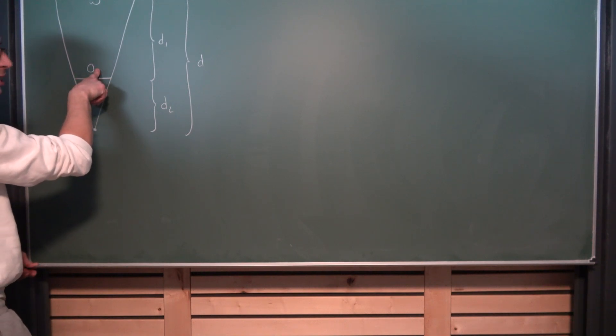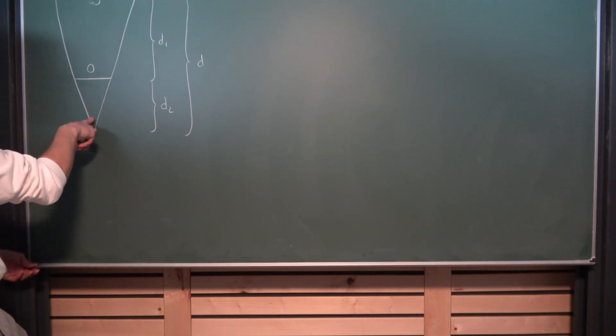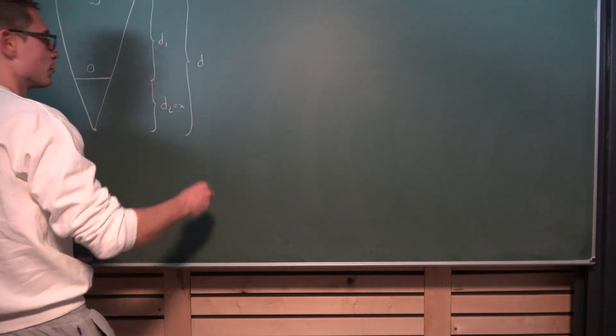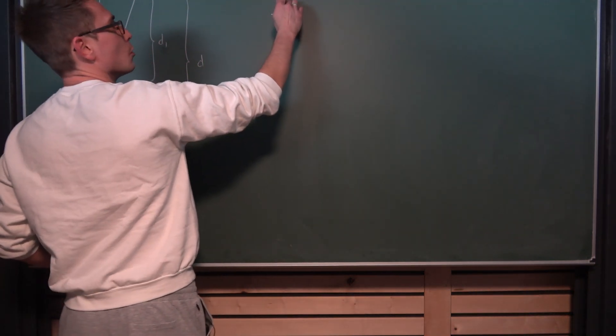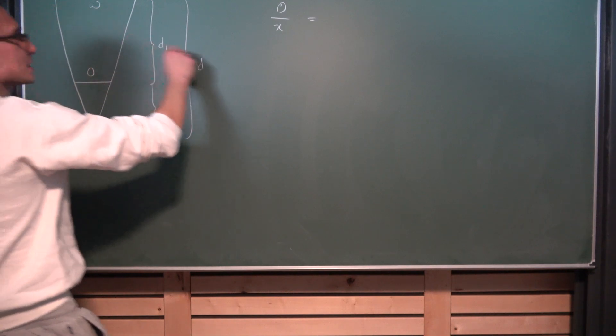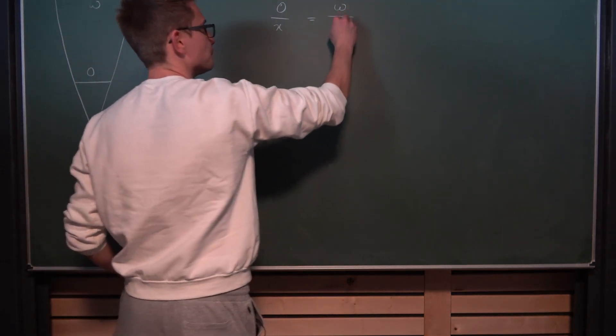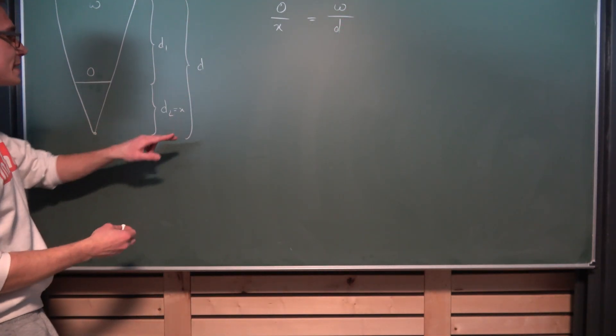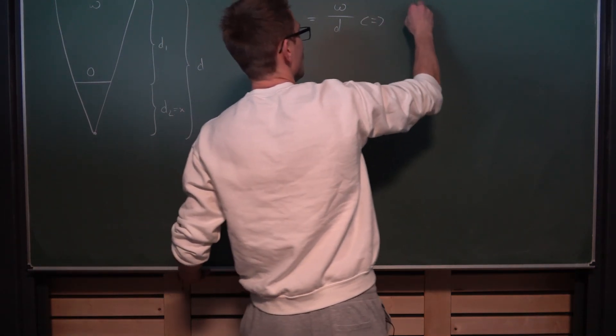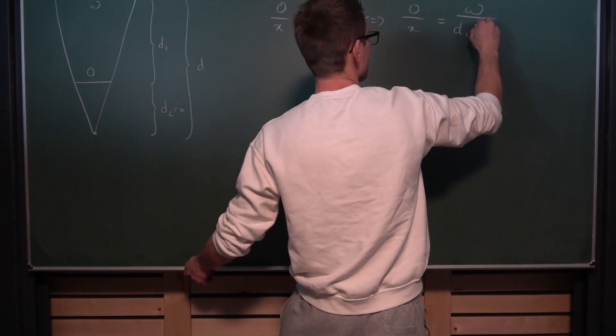Now how does the object's width compare to our distance D2, which I'm gonna call this x for simplification purposes, our variable of our function? Well O divided by x, so shorter divided by longer side, behaves the same as the shorter side W divided by the longer side D or the longer length. Okay but we also know what D is. D is nothing other than x plus D1. So this right here is the same as O divided by x is W divided by D1 plus x.